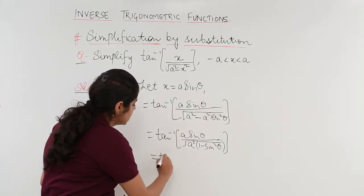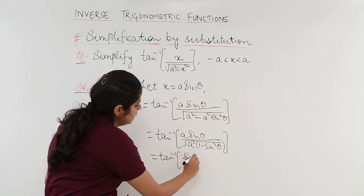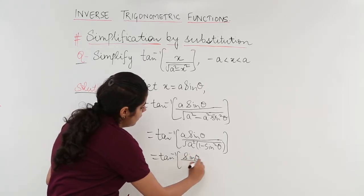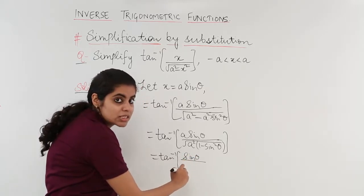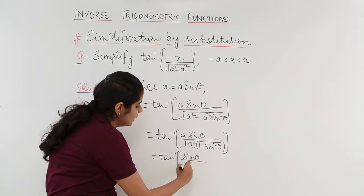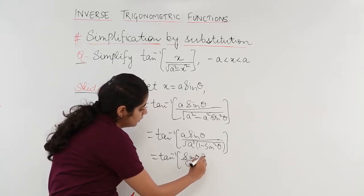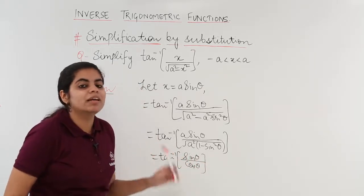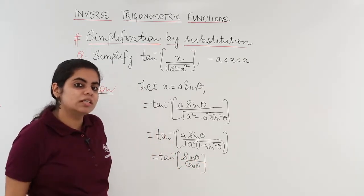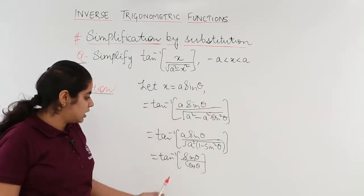The a cancels, so the expression becomes tan inverse of sin theta upon under root of (1 minus sin squared theta). Since 1 minus sin squared theta equals cos squared theta, the root becomes cos theta. So we have sin theta upon cos theta, which is tan theta.